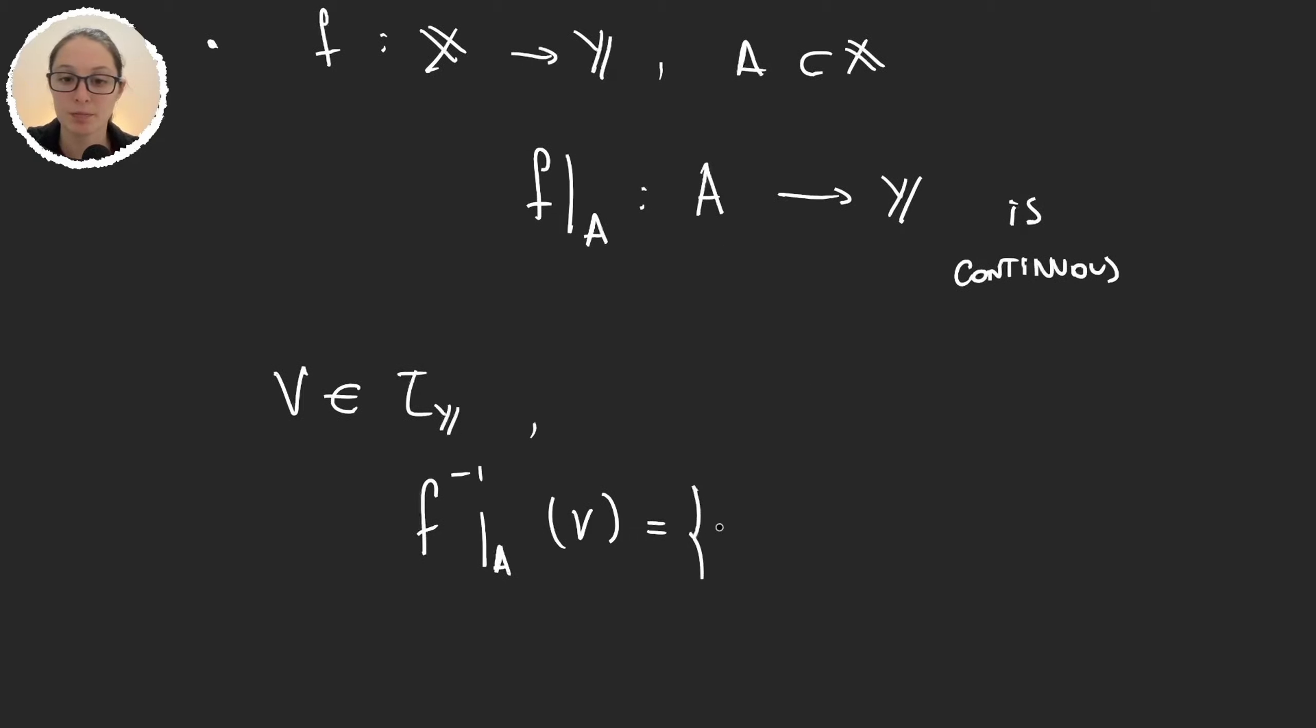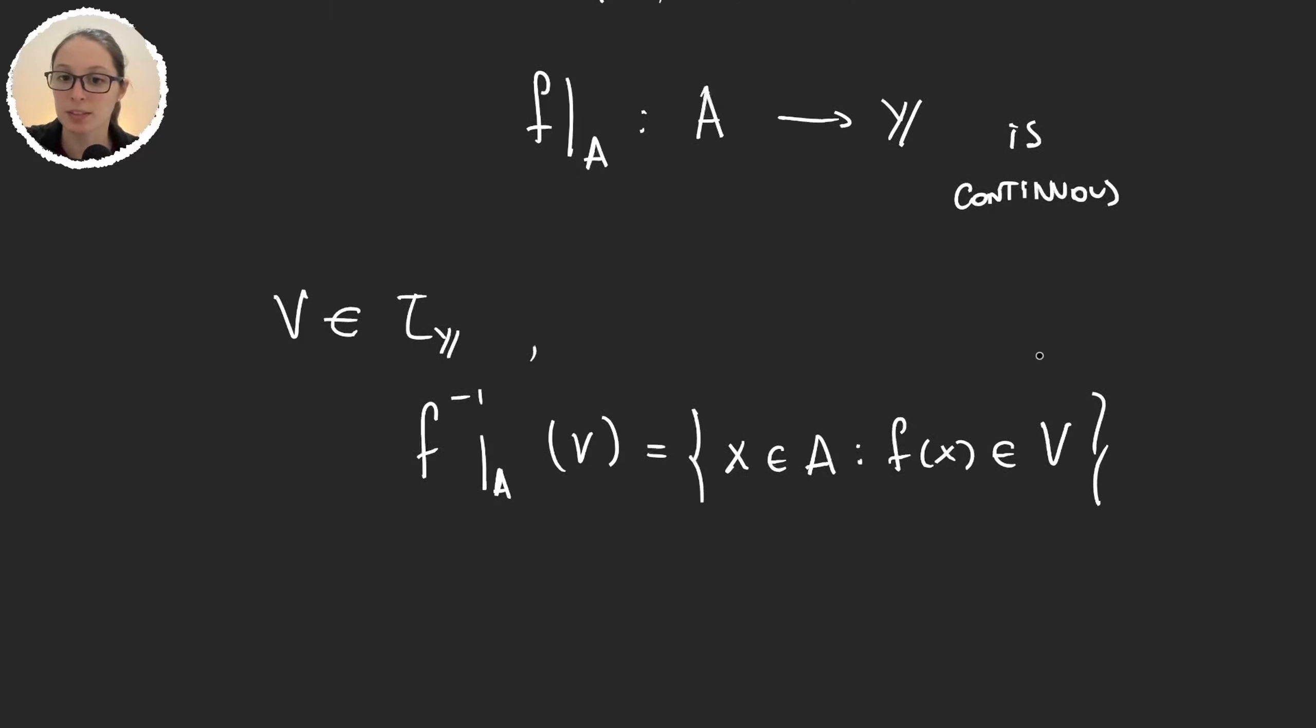all the x in a such that f of x is an element in b. But this set is the same as saying all the x in the space x such that f of x is an element in b, this set intersection a.